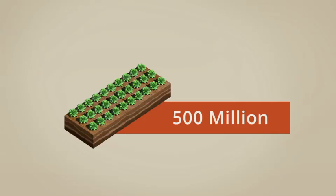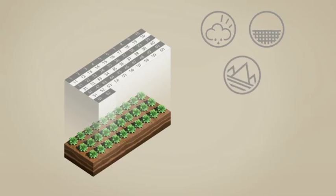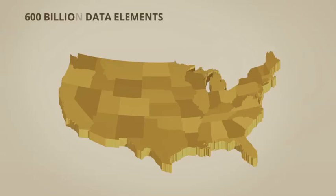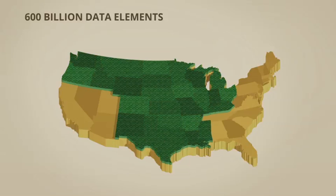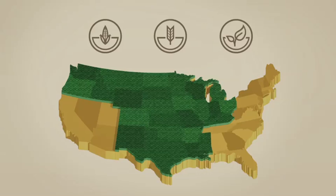Our data scientists took these 500 million microfields, made up of many variables across weather, soil and topography, resulting in over 600 billion data elements, which are used to benchmark 67 billion microfields of corn, wheat and soybeans in the U.S.